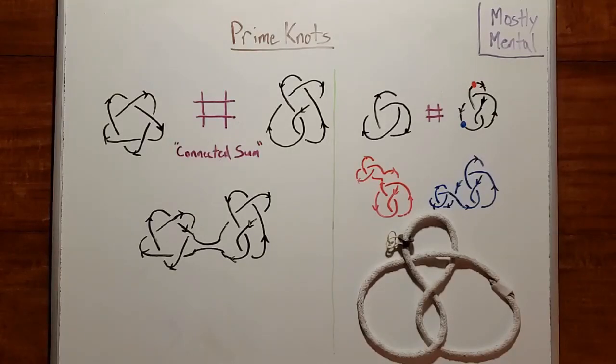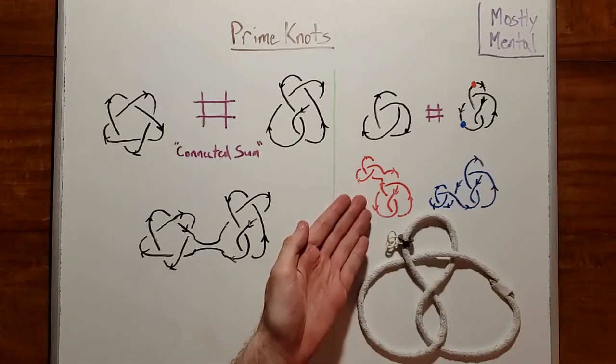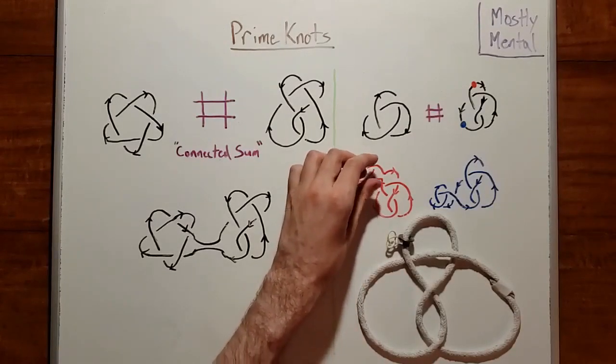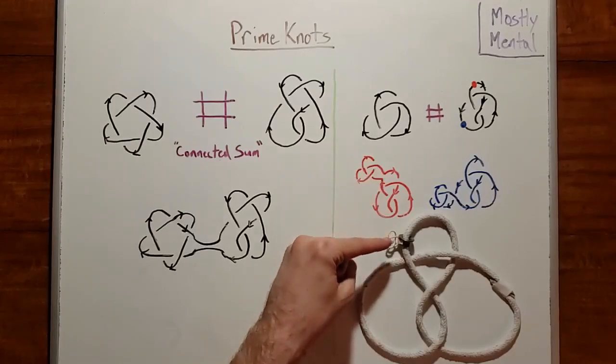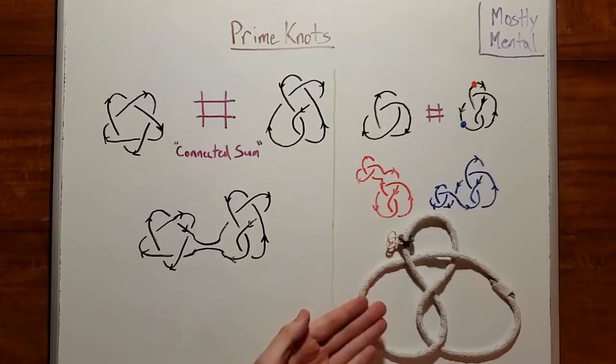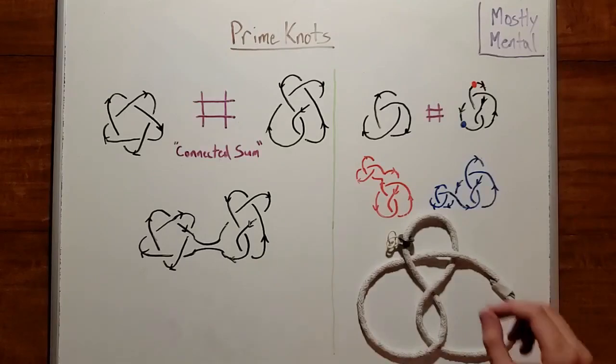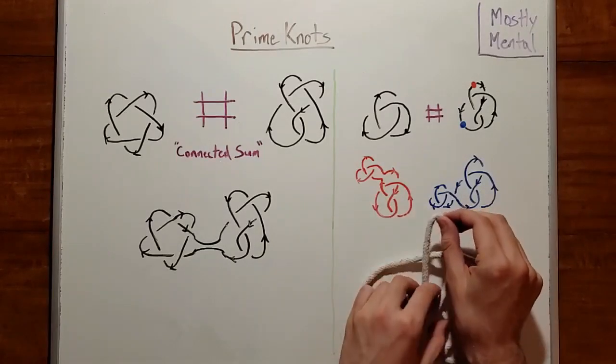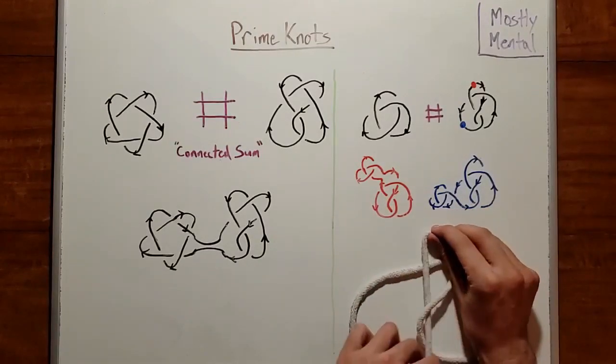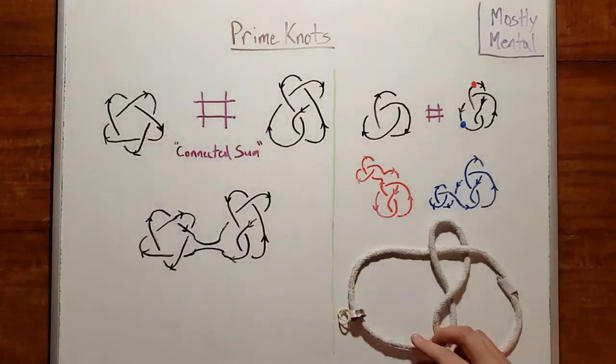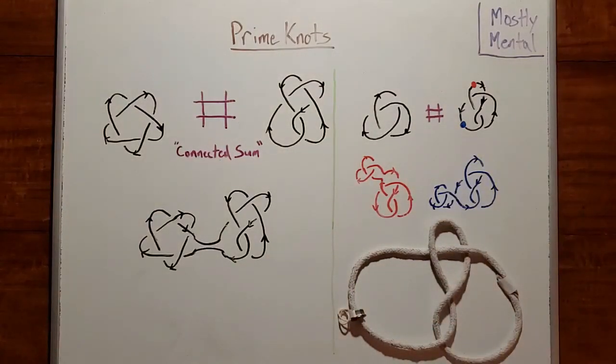To see why, stick the trefoil on at the red point, like so, and then shrink that trefoil down until it's really small relative to the structure of the figure eight. Then we can just slide it along the strand, like a bead on a string, until we get it to the right place. And finally, we can stretch it back out to its full size. With this same logic, we can see that for any two knots, the sum doesn't depend on where the knots are joined.